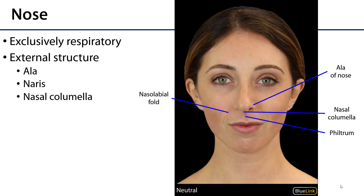The external nose consists of nares or nostrils that are separated by the nasal columella. This is just a skin-covered fleshy part that is an extension of the nasal septum that would divide the left from the right nasal cavity. You can palpate your own and feel that there is nothing within it that is of the septum. Surrounding the nares are the ala, or the wings, of the nose. The nose is a part of the respiratory pathway — it is exclusively a respiratory organ. It is not involved in the aerodigestive pathway, which would be the mouth and pharynx, although the nose and nasal cavities do communicate with the nasopharynx.